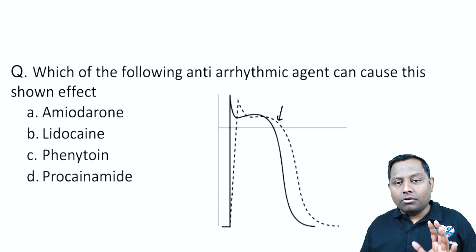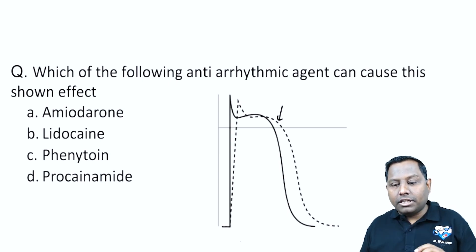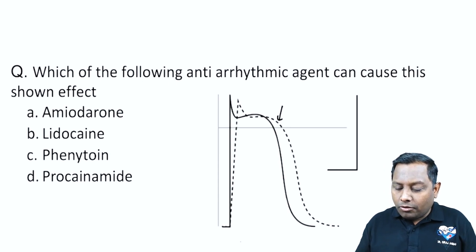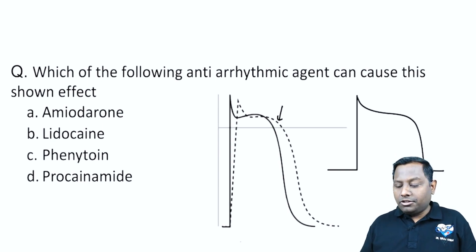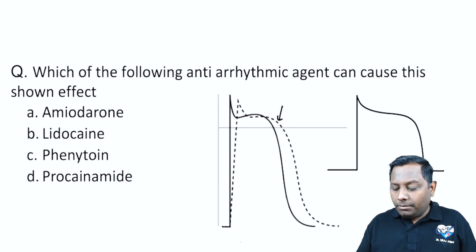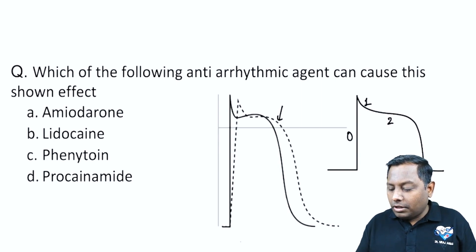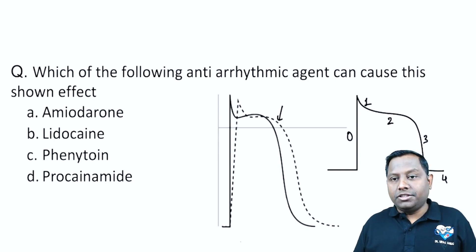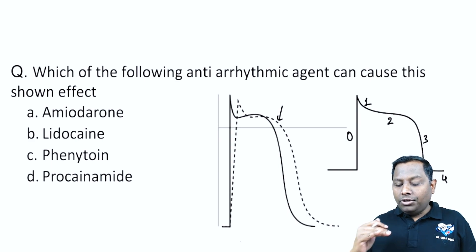Whenever you look at a question like this, always remember how a normal action potential looks. If you look at a normal action potential duration at the myocyte, it has phase 0, then phase 1, phase 2, phase 3, and the resting membrane potential which is phase 4.